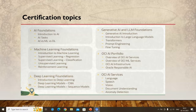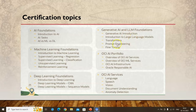The course also covers unsupervised learning, reinforcement learning, and deep learning — particularly for vision tasks like object recognition. Then comes generative AI, which is all related to ChatGPT. Topics include generative AI introduction, large language models, transformers, and prompt engineering, which you keep hearing about all over YouTube.